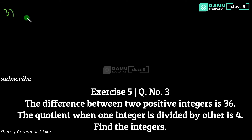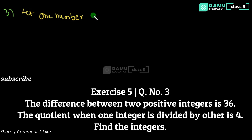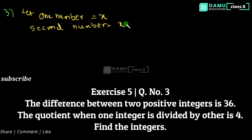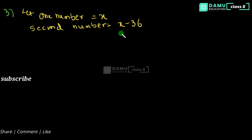The third question is: the difference between two positive integers is 36. The quotient when one integer is divided by the other is equal to 4. Find those integers. Let one number be equal to x.